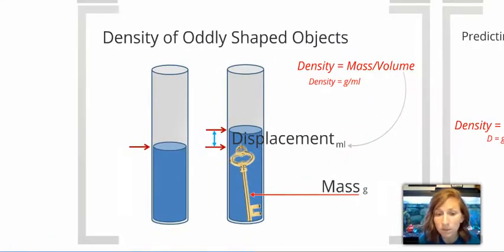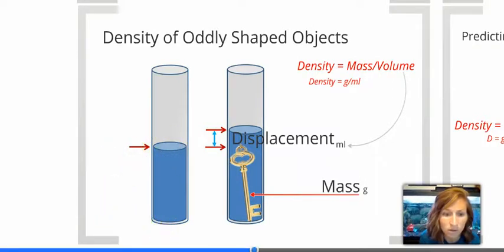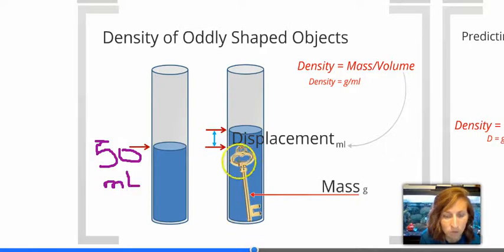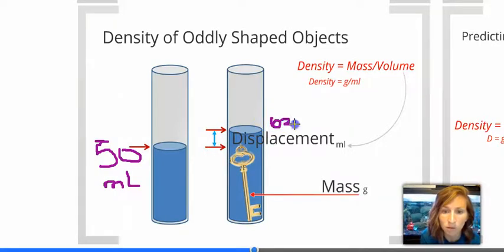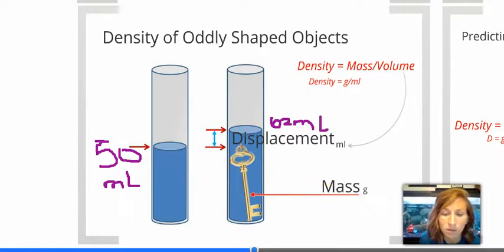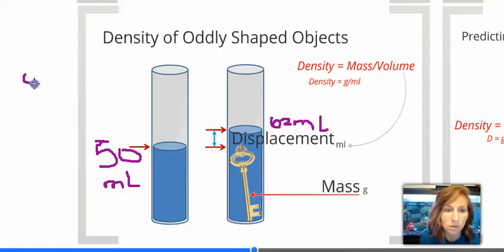So, if we have an irregular object like this key here, you can measure out the amount of water in a graduated cylinder. So, let's just say right here, we have 50 milliliters of water. If we drop this key, we don't know the volume of that key, we can take the displacement here of water. So, when you drop the key in the water, the water will go up. And let's just say it went up to 62 milliliters. Pardon my writing. This tool is hard to write with.